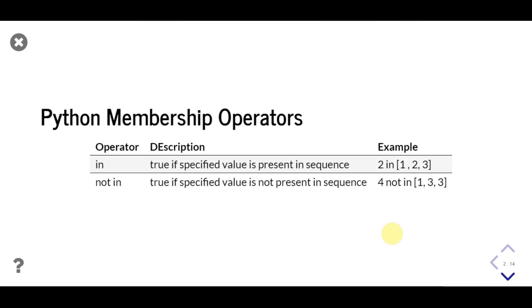Membership operators in Python check if any value is present in a sequence or not. See, there are some examples: 2 is present in the sequence, so 'in' operator will return true and 'not in' operator will return false. In another example, 4 is not present in the sequence, so 'in' operator will return false and 'not in' operator will return true.